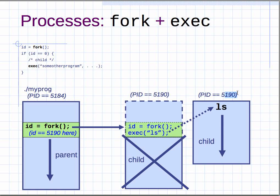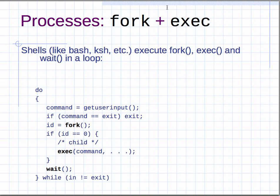Note: exec does not create a new process ID — fork does. Shells like bash and ksh run fork inside a loop. All a shell does is fork a new child process, and in the child exec whatever command the user typed in. In the parent, the return value is non-zero so it moves to the next statement, which is wait — the parent waits for the command to finish. Once done, it loops, forks another child, execs the next command, and repeats. That's really all a shell does.